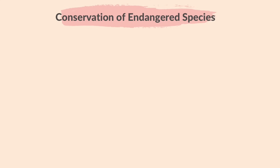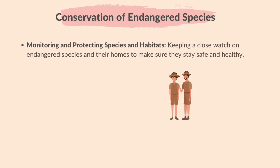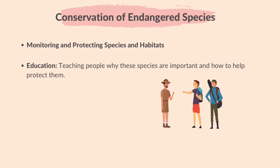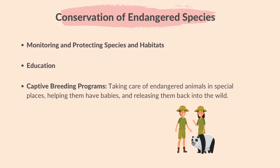Here's how endangered species can be conserved. Monitoring and protecting species and habitats — keeping a close watch on endangered species and their homes to make sure they stay safe and healthy. Education — teaching people why these species are important and how to help protect them. Captive breeding programs — taking care of endangered animals in special places, helping them have babies and releasing them back into the wild.